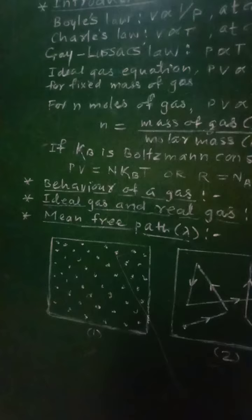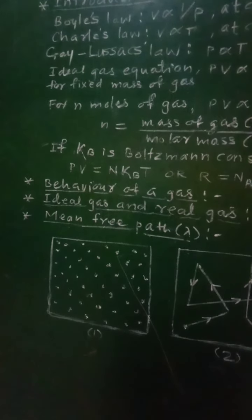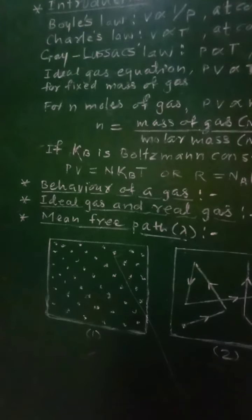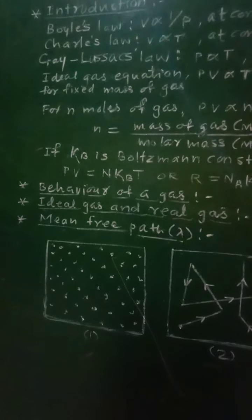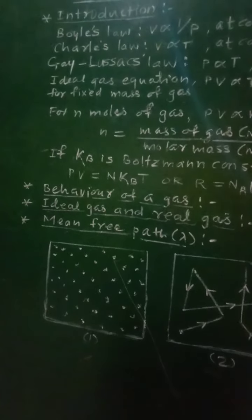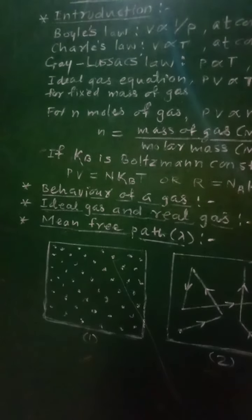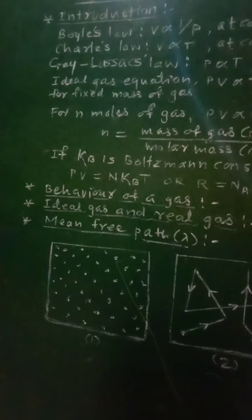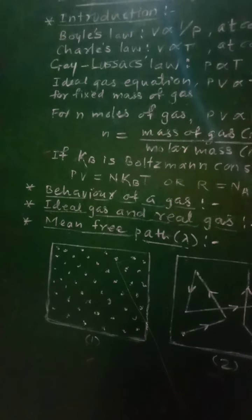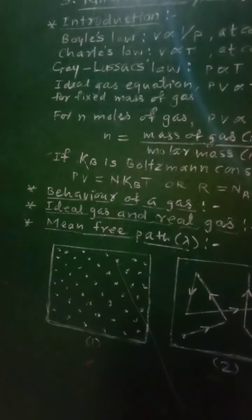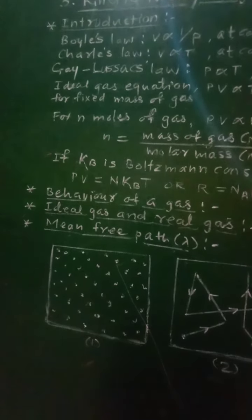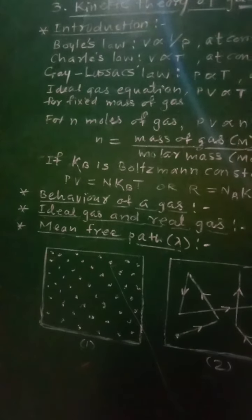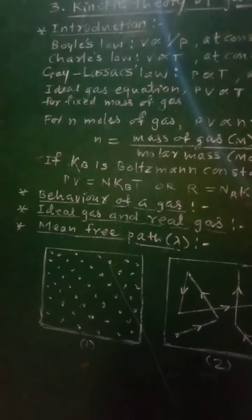Real gases are composed of atoms or molecules which do interact with each other, and hence no real gas is truly an ideal gas. If the atoms or molecules of a real gas are so far apart that there is practically no interaction between them, then the real gas is considered as an ideal gas, but this happens only at very low density.